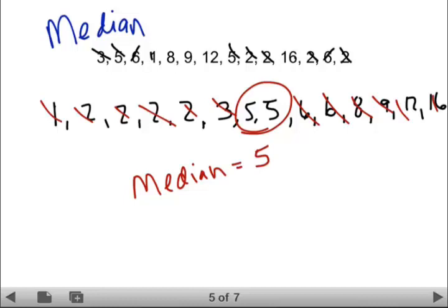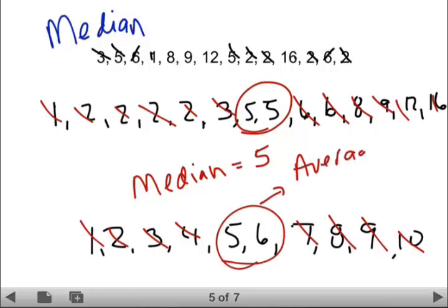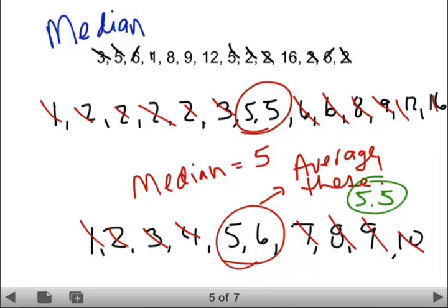However, if it was a situation where you had something like this: one, two, three, four, five, six, seven, eight, nine, ten. We did all our crossing out and we're left with five and six in the middle. What we do then is you just take the average. The median would then be 5.5. In this example we end up with one single number with an odd number of data. When we have an even number of data, you're going to get two in the middle. If they're the same, your median is just that number. If they are different, you average those two numbers and the median is the average of those two.